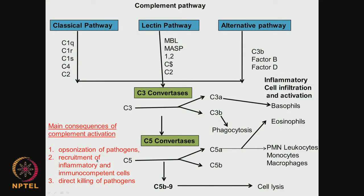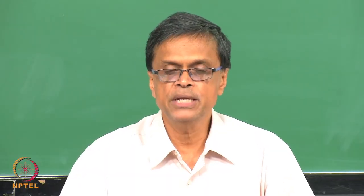Second, recruitment of inflammatory and immunocompetent cells — these cells start collecting and moving toward the target site, toward the place where the biomaterial is placed. Third, direct killing of pathogens — they go directly and kill the pathogens. The biomaterial is always considered a foreign object, so for the immune system it is unwanted.